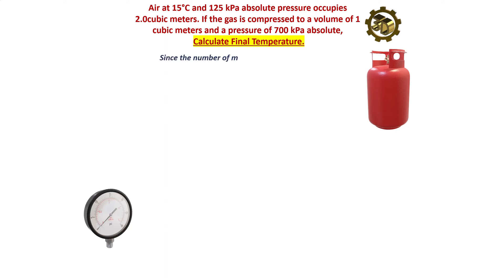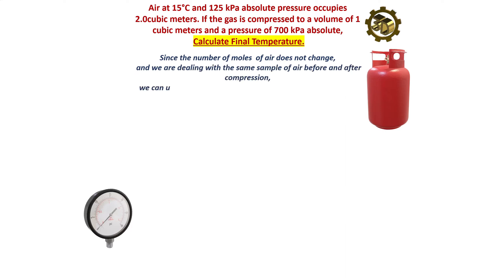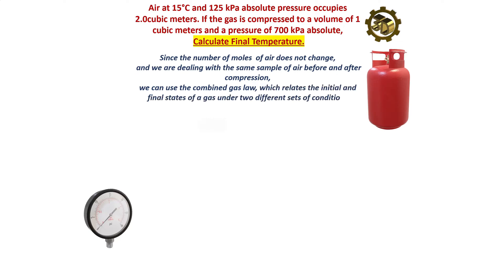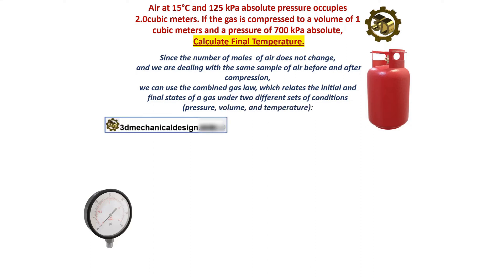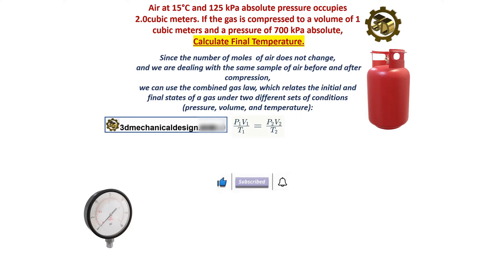Since the number of moles of air does not change, and we are dealing with the same sample of air before and after compression, we can use the combined gas law which relates the initial and final states of a gas under two different sets of conditions: pressure, volume, and temperature. P1 times V1 divided by T1 equals P2 times V2 divided by T2.